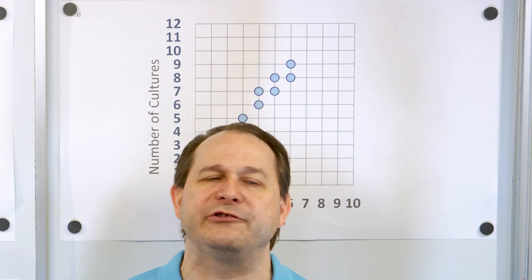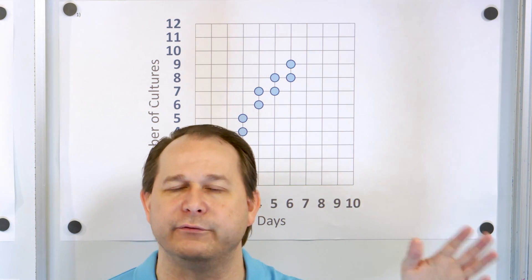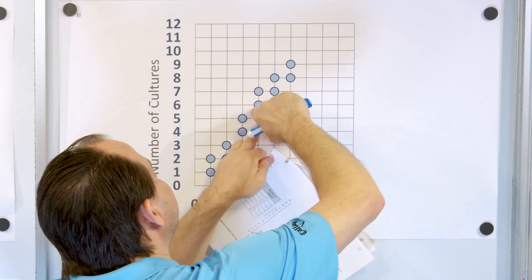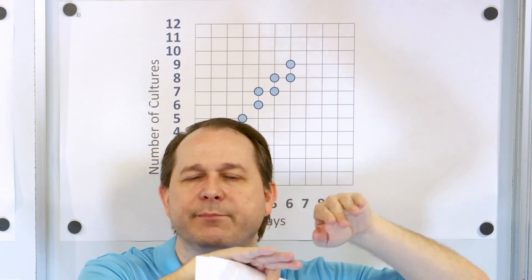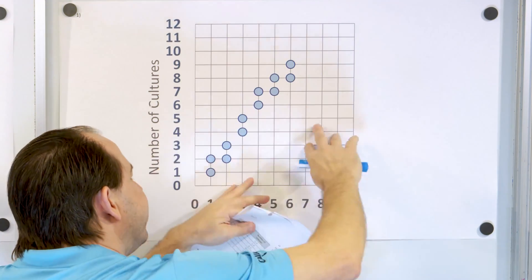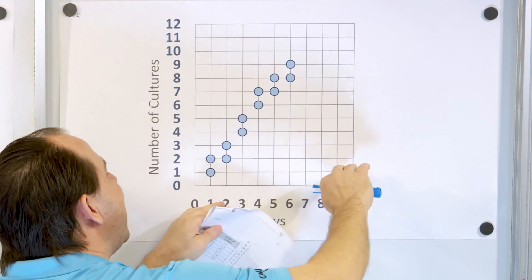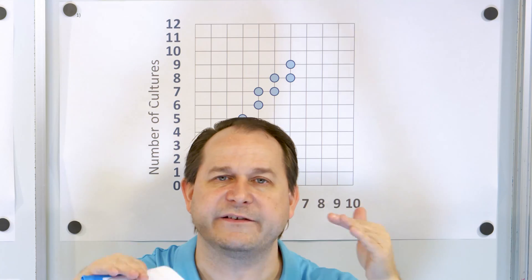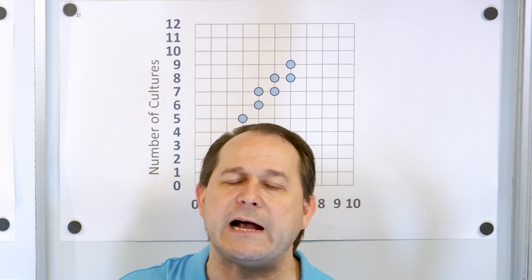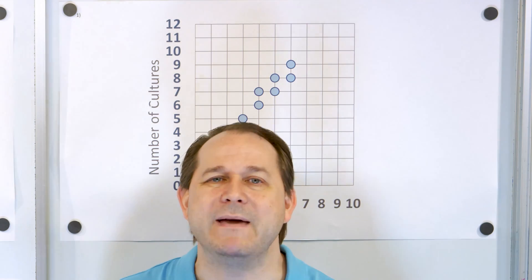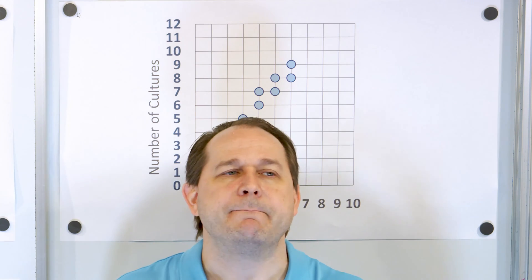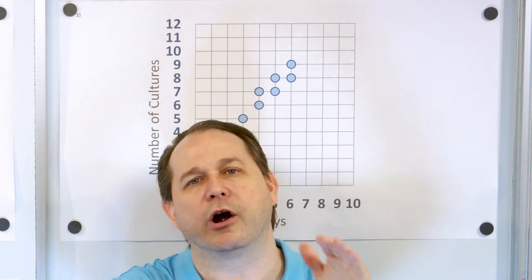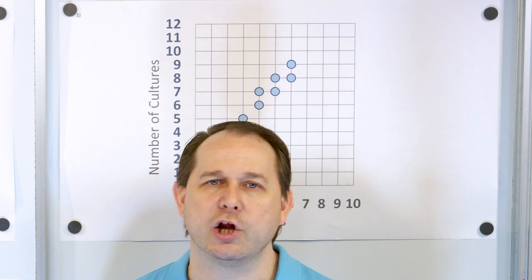When you get further along in statistics, you learn ways to find the true mathematical best line through the data points. You want to find a line where you have an equal number of data points on both sides, and you minimize the total distance of all the data points from the line. You can use statistics to calculate the total average distance of all points from the line — that's called a line of best fit.